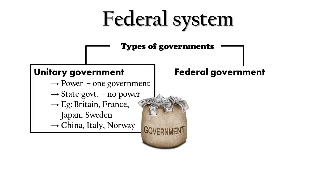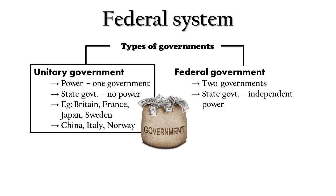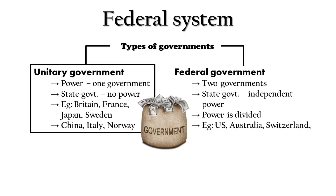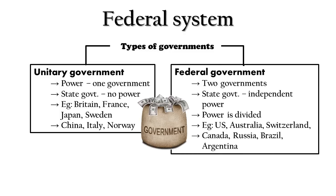In the federal type of government, there are two governments — central government and state government — and both have independent power. Power is divided here; there is division of power. But in the unitary type of government, there is no division of power; only the central government gets all the power. Examples of federal governments are USA, Australia, Switzerland, Canada, Russia, Brazil, and Argentina.